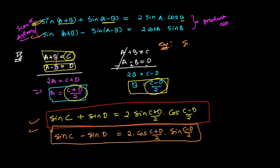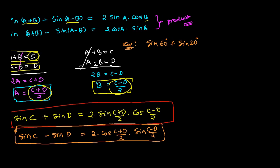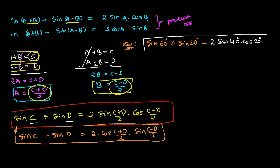For example, if we have sine 60° plus sine 20°, we can easily convert this sum form into the product form. Sine c plus sine d equals 2·sine((c plus d)/2)·cosine((c minus d)/2). So it becomes 2·sine((60 plus 20)/2)·cosine((60 minus 20)/2), which is 2·sine(40°)·cosine(20°). This is how we convert the sum form of the sine function into the product form.